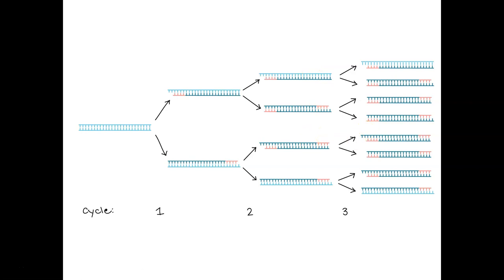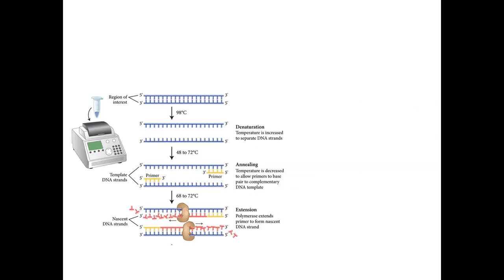Pulling double-stranded DNA apart, having primers come in and bind, then making new molecules of DNA with those existing molecules as template. Separate strands, prime strands, make new strands. Separate strands, prime strands, make new strands. That's DNA polymerase chain reaction in a nutshell.